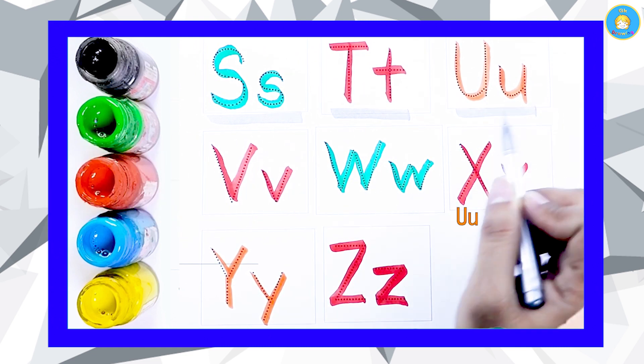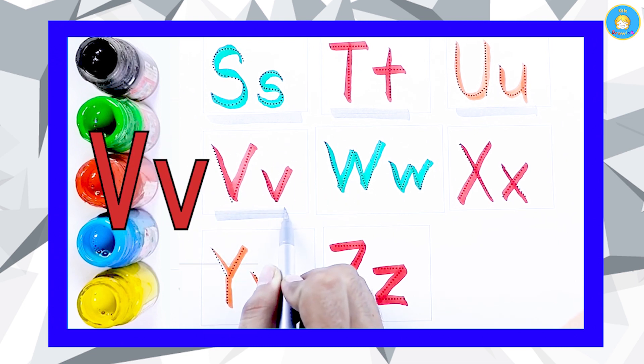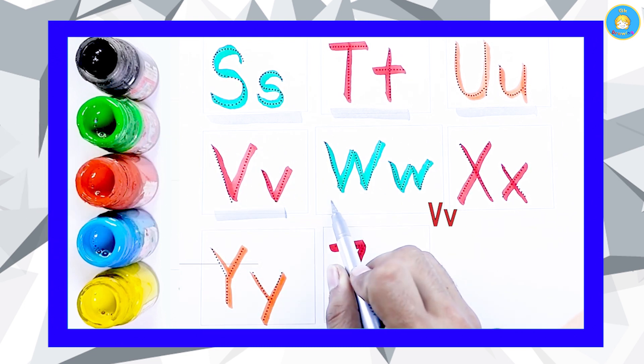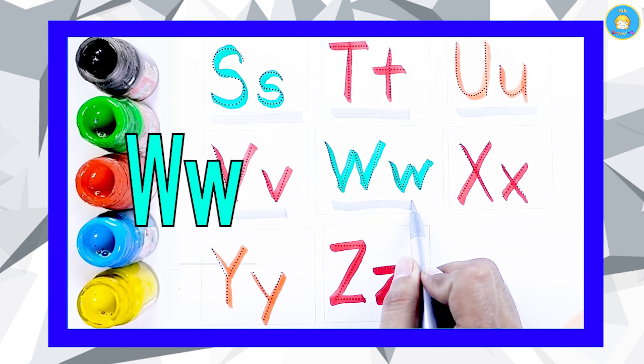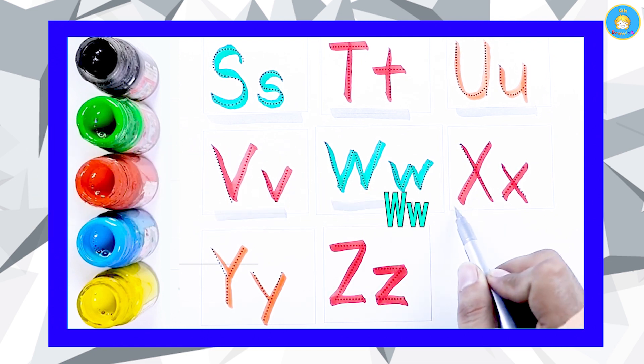Red color V, V for Van. Green color W, W for Watch.